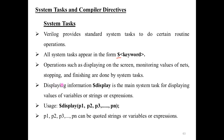Displaying information uses the system task keyword dollar symbol display. This is the main system task for displaying values of variables, strings, or expressions. Using this system task you can display any value — a variable, expression, or string. These things will be displayed in the console of the Xilinx window. Usage is: dollar symbol display, open parenthesis, then p1, p2, p3 — which may be strings, variables, or expressions — ending with a semicolon.